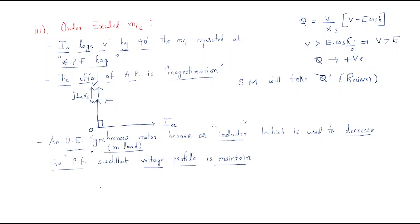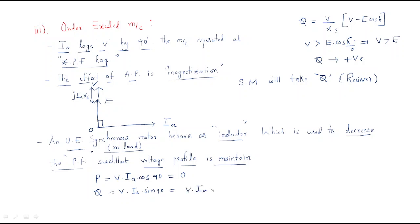The active power P = V·Ia·cos φ. Since the angle between voltage and current is 90 degrees, cos 90° = 0, so active power becomes zero. The reactive power Q = V·Ia·sin 90° = V·Ia.